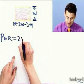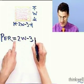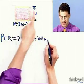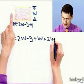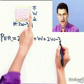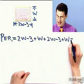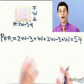The perimeter would equal 2w minus 3 plus w plus 2w minus 3 plus w. We're told in the problem that has to be 54, and so now I have an equation.